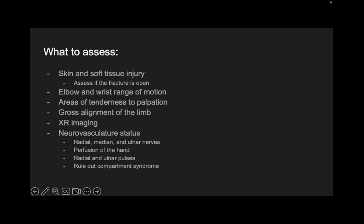When abducting you're checking the dorsal interossei; when adducting you're checking the palmar interossei. Once you've checked motor function, you're not done — you also need to check sensation. The radial nerve covers mostly the dorsal hand, ulnar nerve covers the last two digits, and the median nerve covers the palm, thumb, and first three and a half digits depending on the resource.